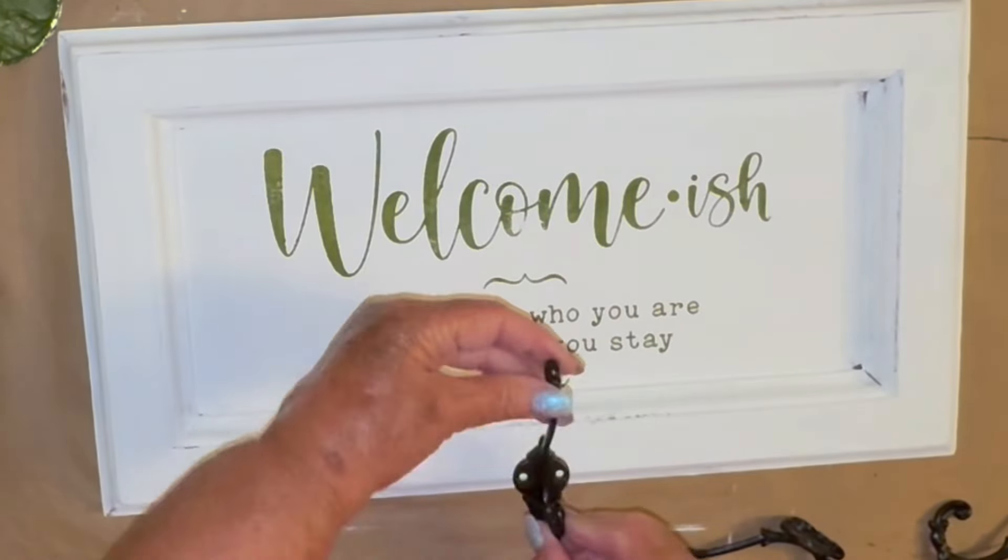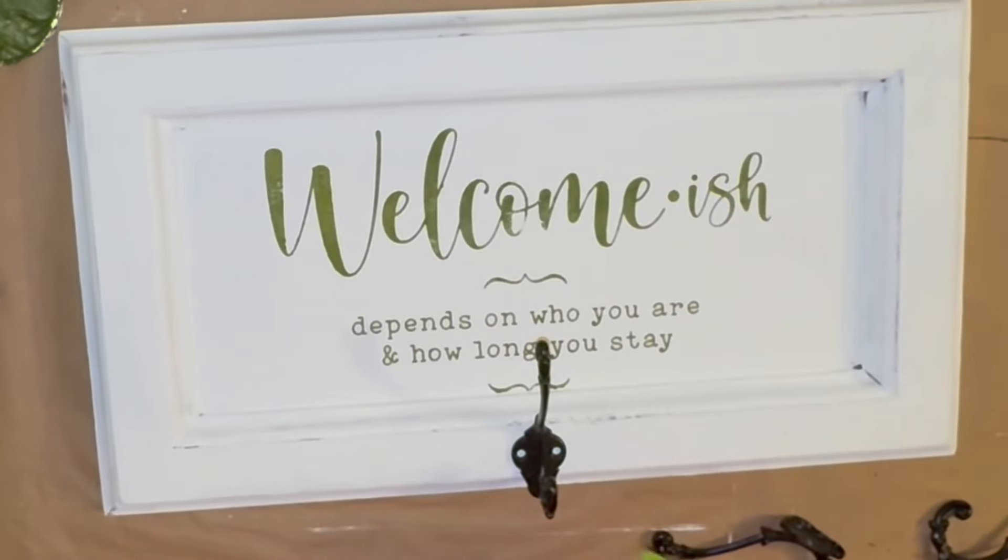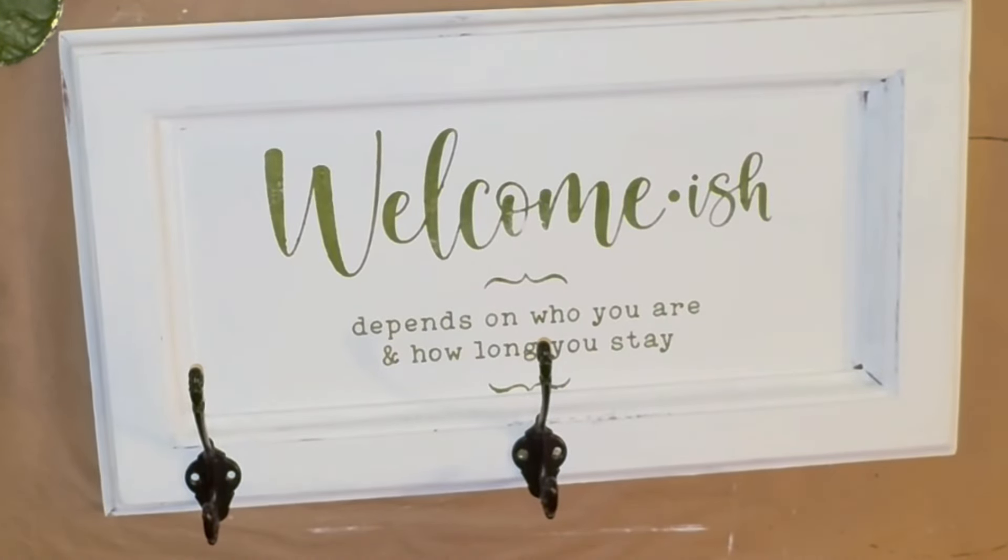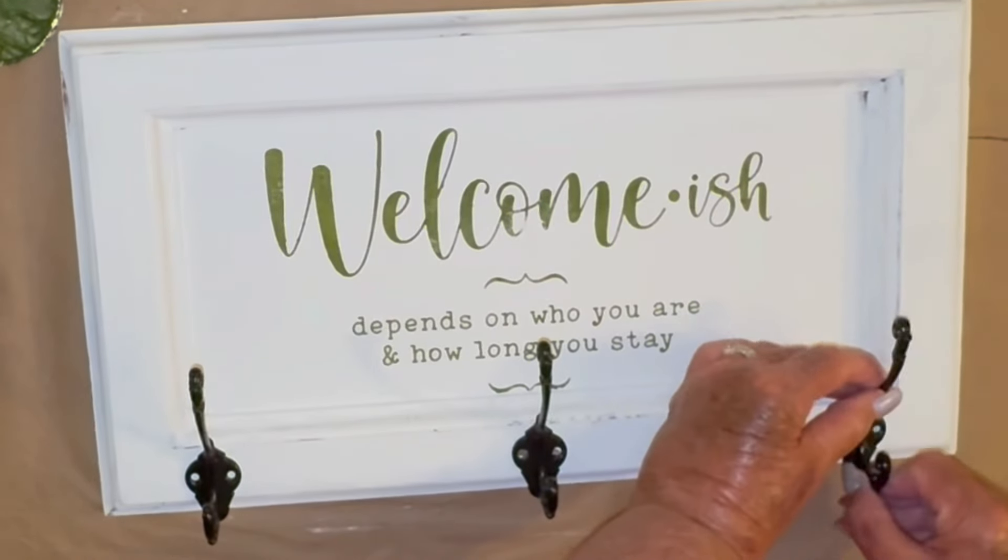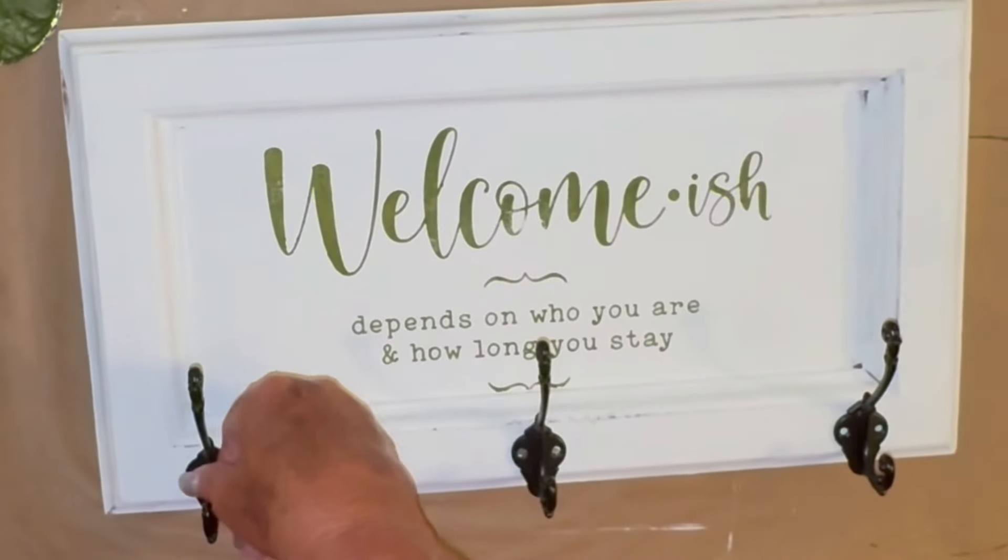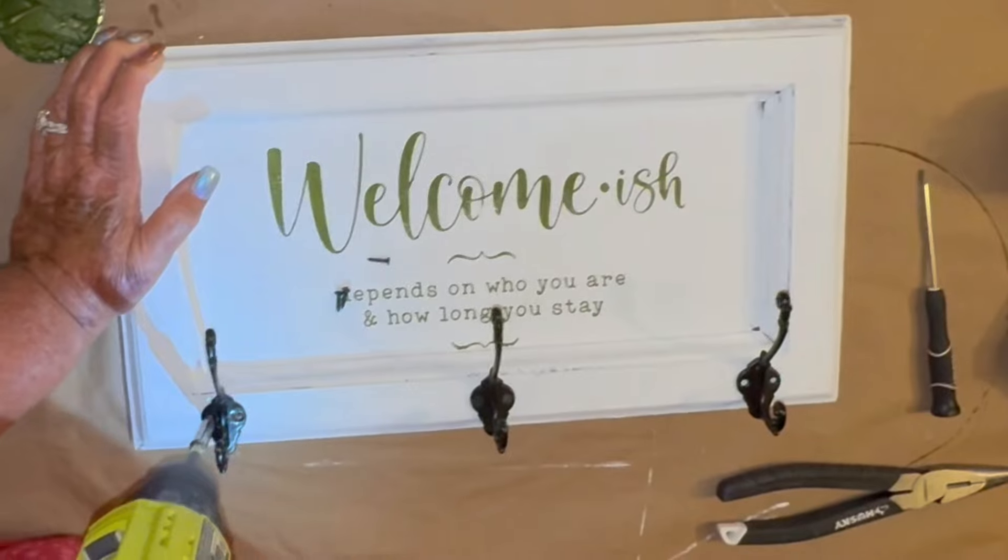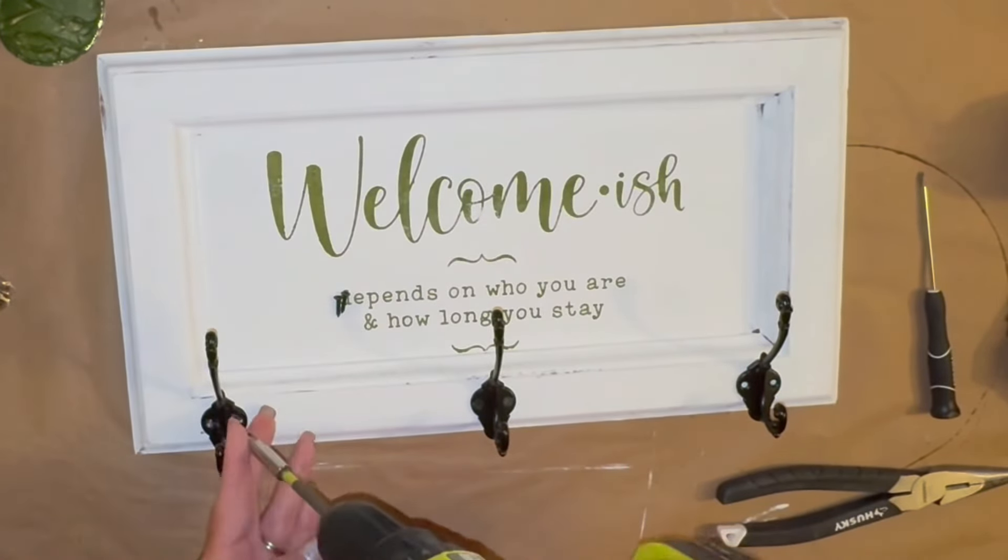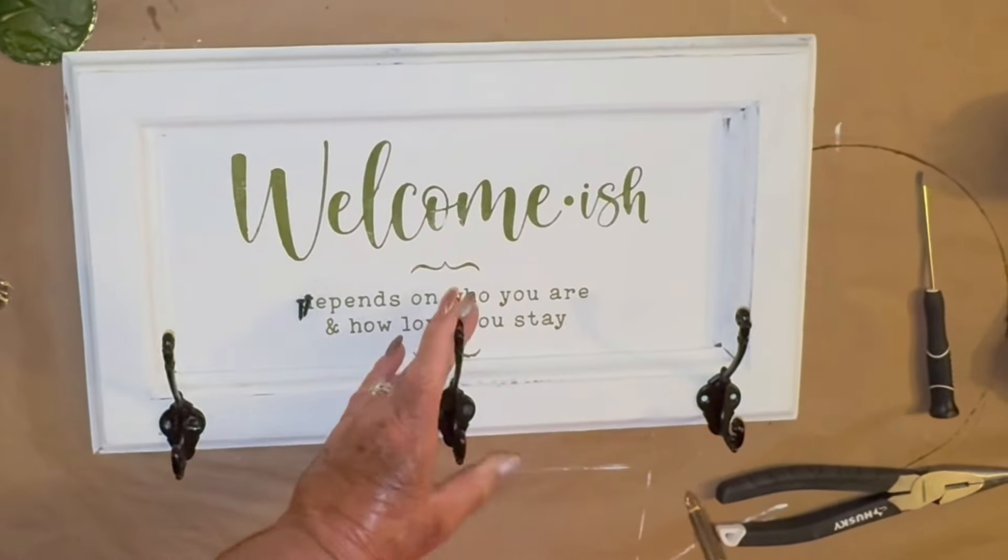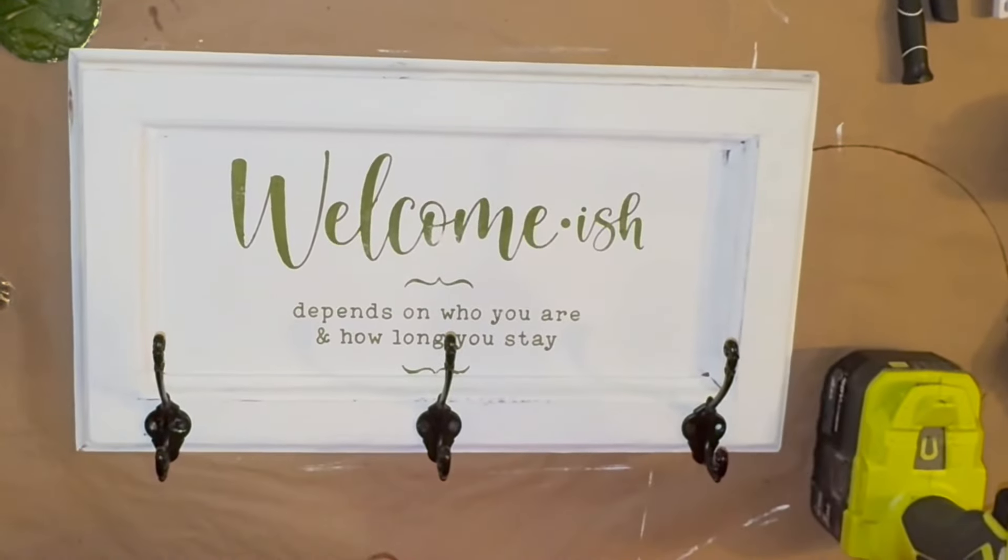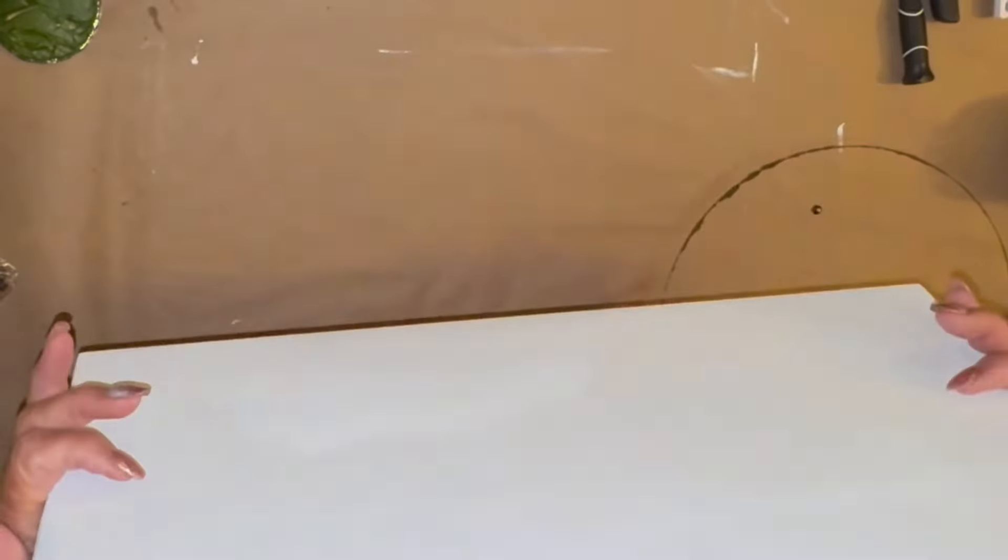Now again it looks like I went straight into putting my coat hooks on. I didn't. I let it dry but with the magic of video and time lapse it's already dried and I didn't show this but I took some polyurethane from Weatherwash and I polyurethaned over this whole entire piece and what that's going to do is protect my paint and my little sign, my welcome-ish words.